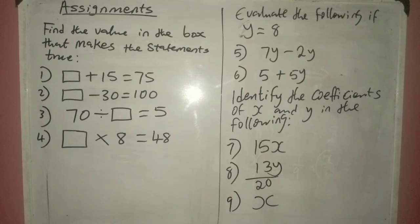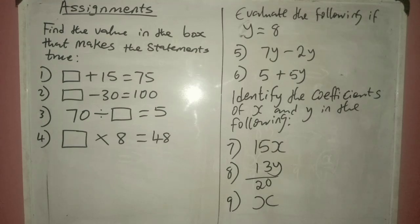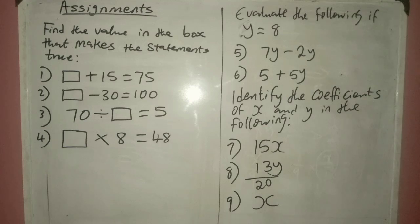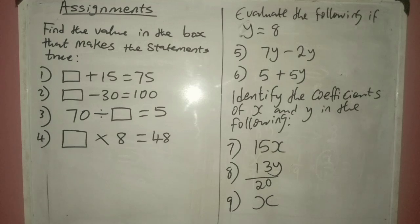These are your assignments. The first part says: find the value in the box that makes the statements true. Number 1: box plus 15 equals 75. Number 2: box minus 30 equals 100. Number 3: 70 divided by box equals 5. Number 4: box multiplied by 8 equals 48. Then the other side: evaluate the following if y equals 8. Number 5: 7y minus 2y. Number 6: 5 plus 5y. Then the last part: identify the coefficients of x and y in the following. Number 7: 15x. Number 8: 13y over 20. Number 9: x. Try to do this in your rough book, not in your major mathematics notebook. See you in the next video — don't forget to click on the subscribe button. You'll be able to see other aspects of algebra in this course. Have a beautiful day ahead.